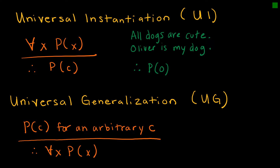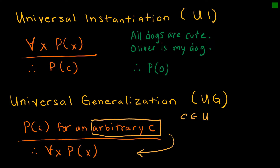Universal generalization is essentially this rule backwards. If I tell you that P(C) is true for an arbitrary C, then I'm saying it is true for all values. The important thing to remember is that C must be arbitrary — if we pick any value from the domain and it's true no matter which value we choose, then we're saying it's true for all values in the domain.